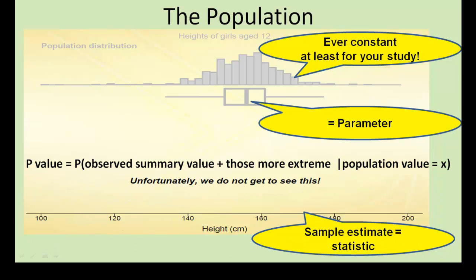How does all this relate to the concept of a p-value? Well, the p-value takes information from both levels. First, the hypothesized value, that is the conditional part of it, is at the population level. In contrast, the summary value plus those values more extreme is at the sample level.